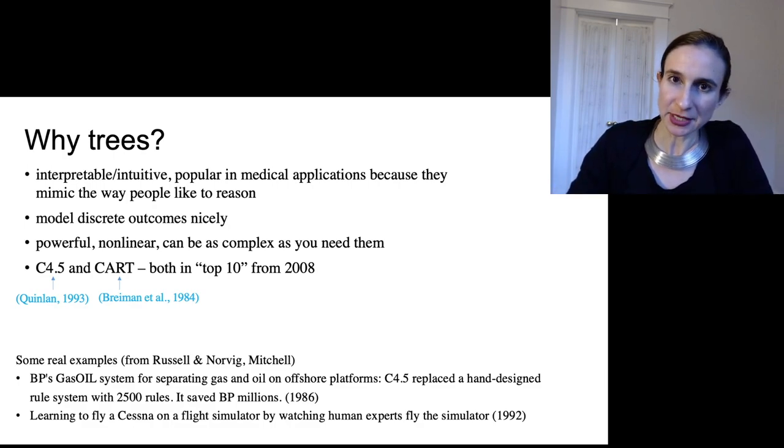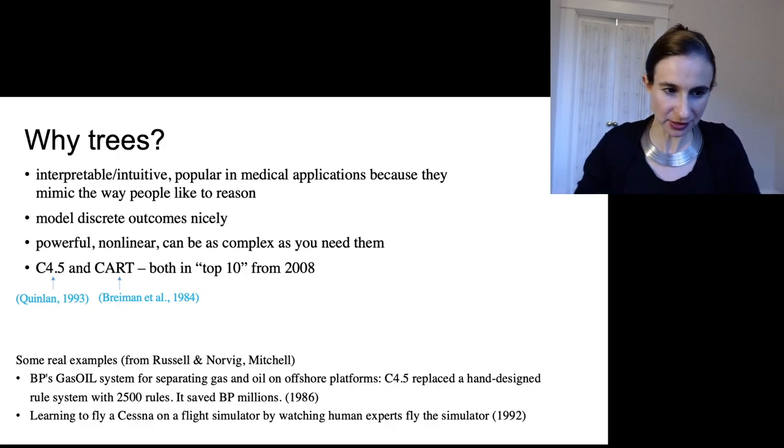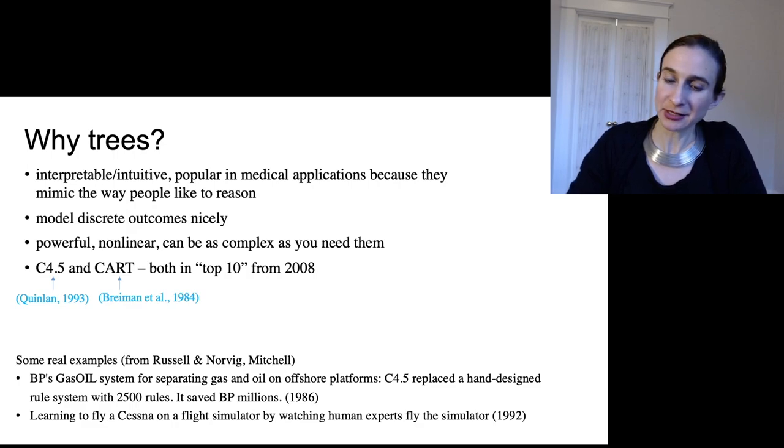It also models discrete outcomes nicely because each leaf is a prediction, so you can make different predictions in different leaves for different discrete outcomes. Also these models are powerful. They're non-linear and they can be as complex as you need them to be, although if they're very complex or very big then they're not going to be that interpretable.